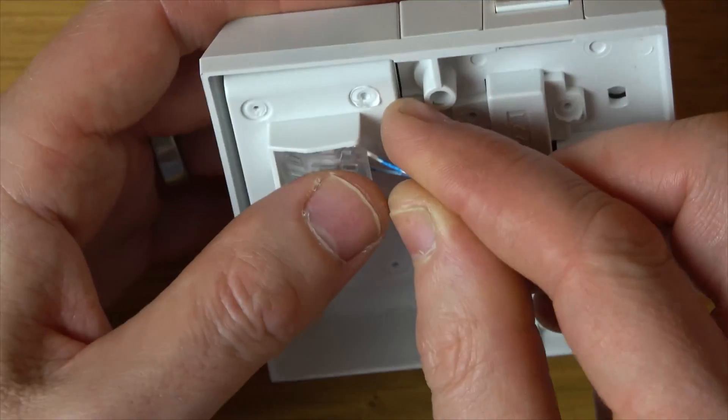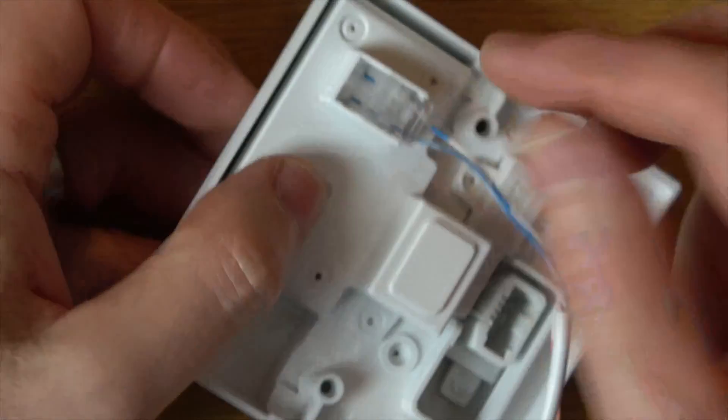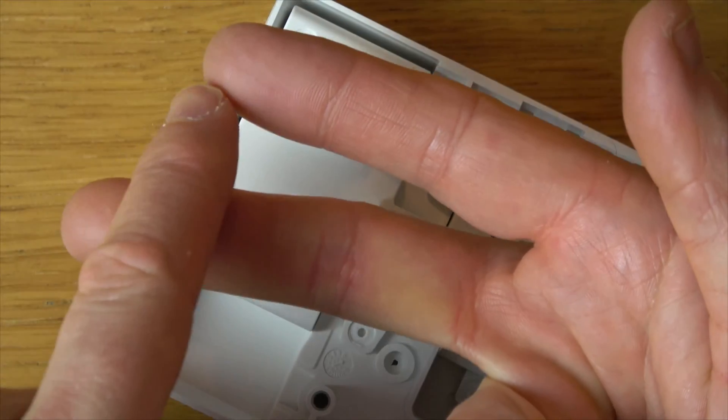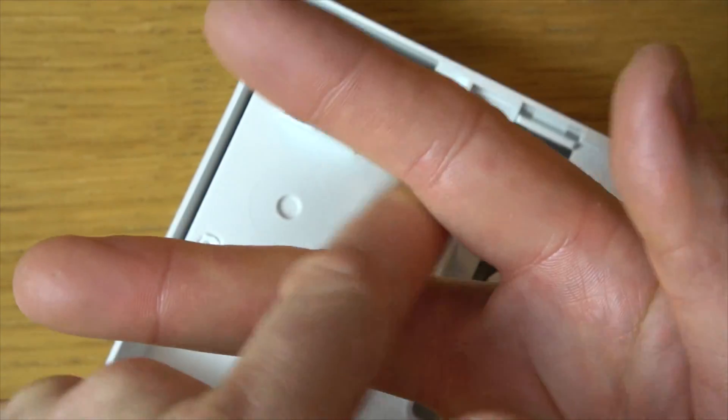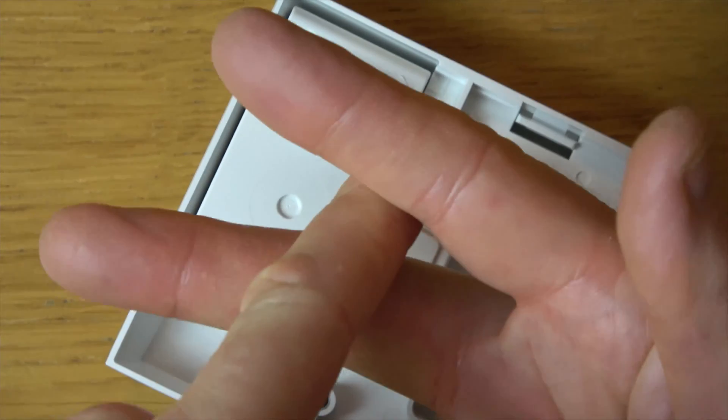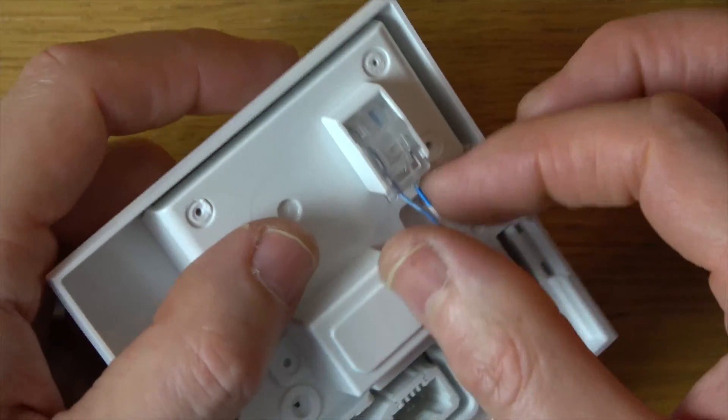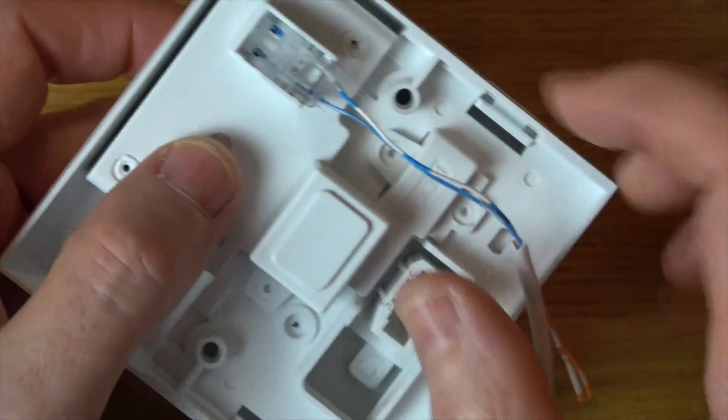Because it's tool-less all we have to do is push down and what that does is there's a little metal V in there and the wire gets pushed down into the metal V. The metal V cuts the insulation of the wire to touch the copper on the inside. So that is now terminated.